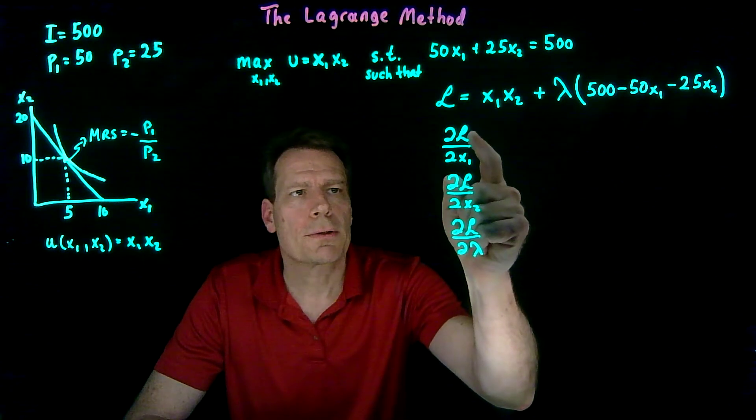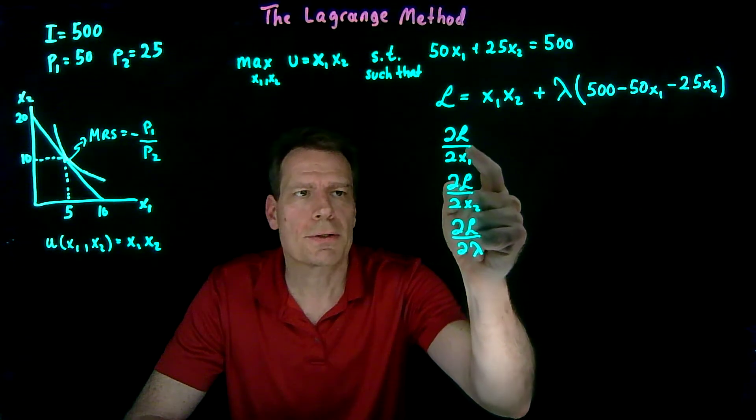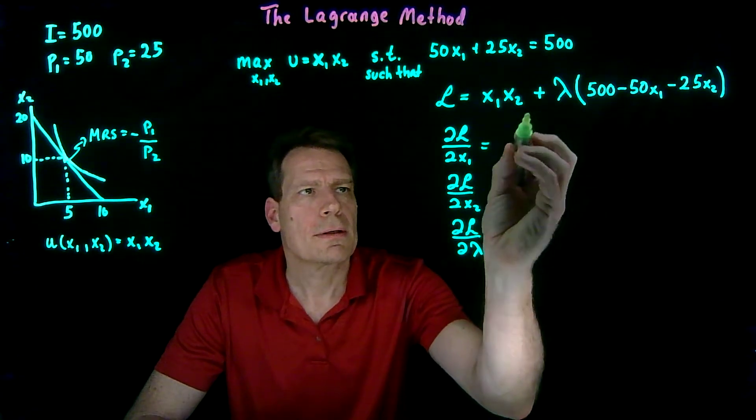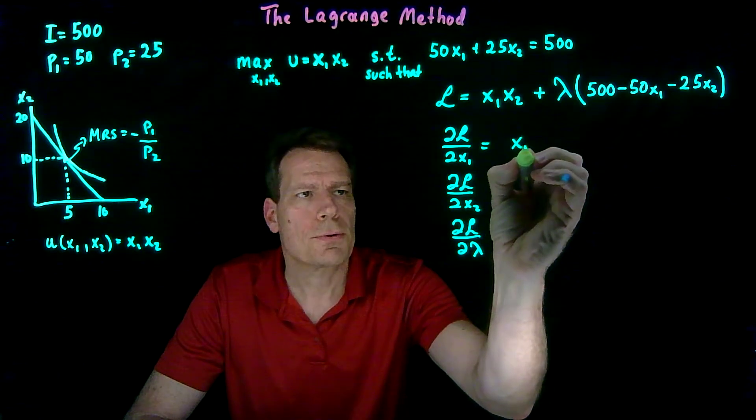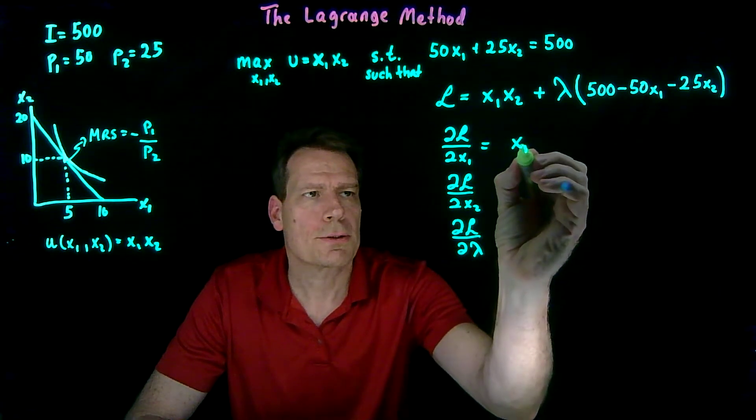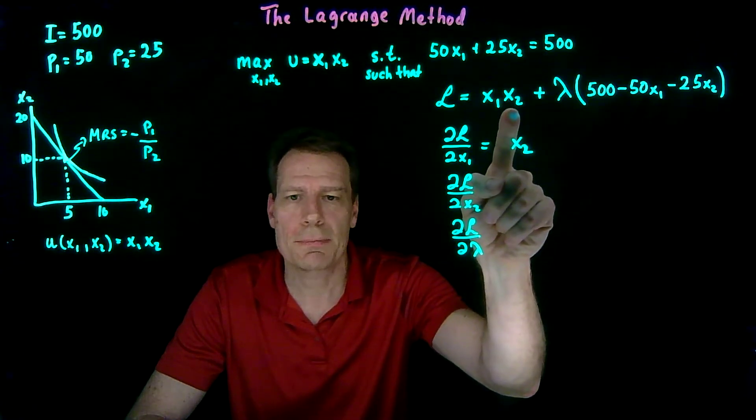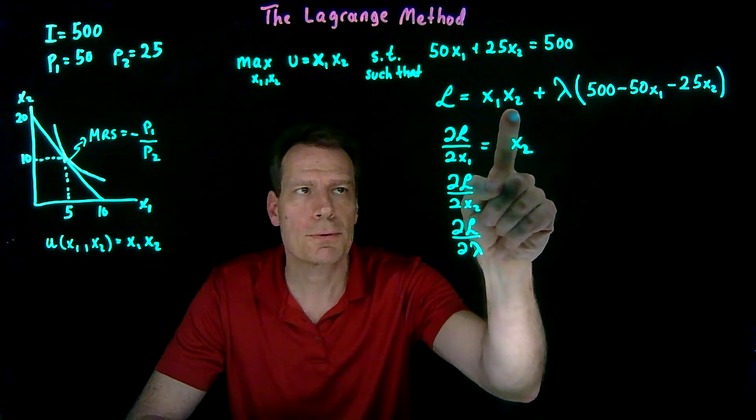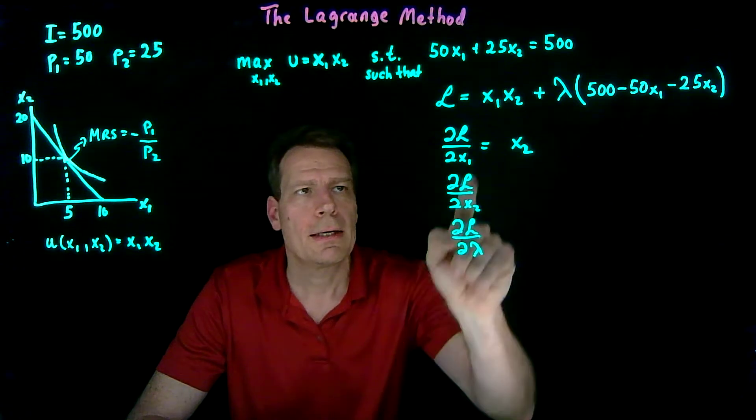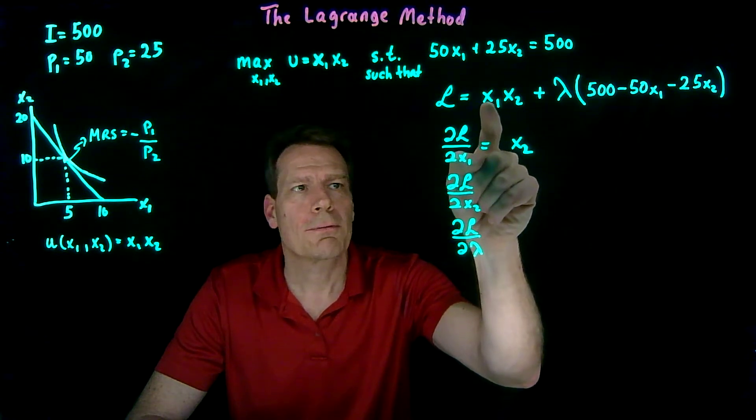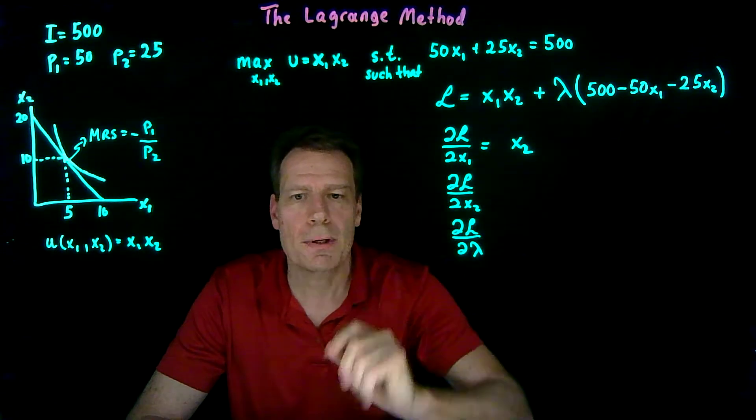The partial derivative of the Lagrange function with respect to x1 is going to give us an x2 in the first term. Why? Because the x2 is not something we're differentiating with respect to, so we're just going to leave it alone. And we take the derivative with respect to x1. The derivative of x1 with respect to x1 is just equal to 1.